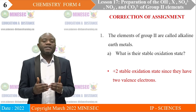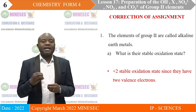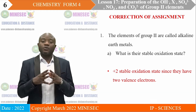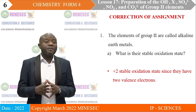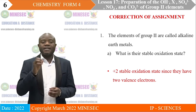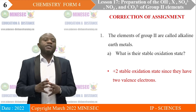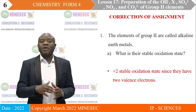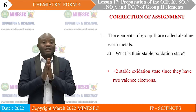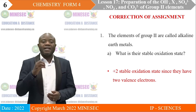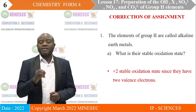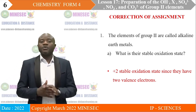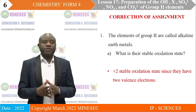Group 2 elements cannot form ions that have another oxidation state. Whenever you think of Group 2 elements, you should be reminded that they have a stable oxidation state of plus 2 — it cannot be plus 1, it can only be plus 2. This is because they lose two electrons on their valence shells to form ions with a plus 2 oxidation state.